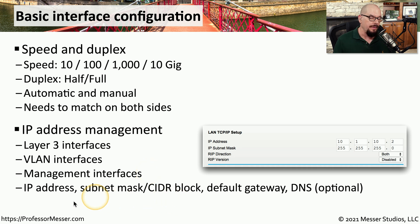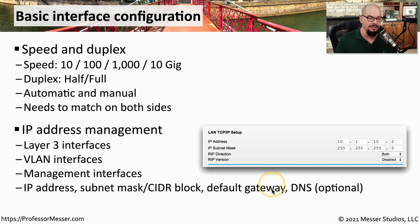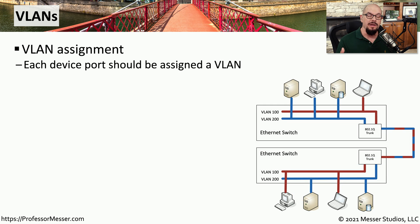This layer 3 configuration would include IP addresses and subnet masks, which might be presented in dotted decimal notation or CIDR block notation. You may also have to put a default gateway or route inside of this device, and it may require domain name system configurations as well.